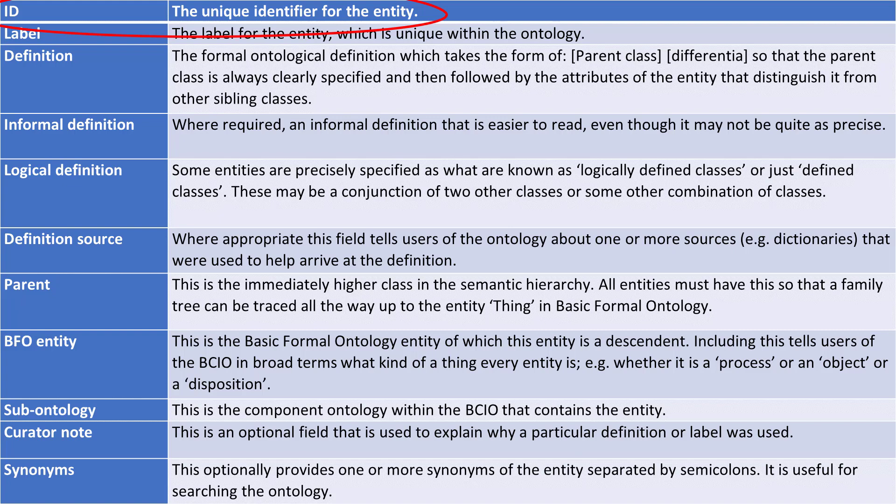In the way that this is accessed outside of the ontology and online, that's converted into a URL or a web link. Then you have the label for the entity, which is always unique within an ontology, although the same label sometimes appears in different ontologies with different definitions. But in the BCIO, every label will be unique within the ontology.